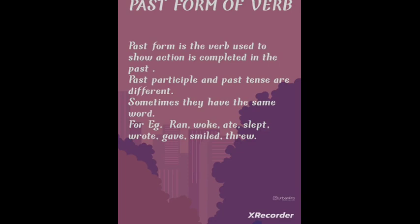The second-to-last form is the past form of the verb. Don't get confused between past participle and past form. Past participle tells that the action is just completed, and that is why we use 'has' or 'have' with it. Whereas past form tells us that the action was completed long ago in the past. Examples: ran, woke, ate, slept, wrote, gave, threw. Sometimes the word used in past form and past participle is the same — for example, 'smiled' is used in both. But for 'give': past participle is 'given' whereas past form is 'gave.'